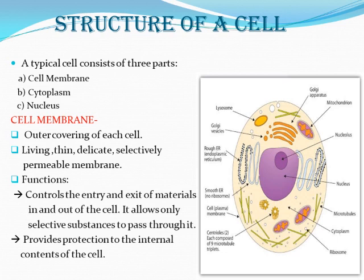Functions of the cell membrane: first, it controls the entry and exit of materials. Any material absorbed by the cell — its entry or exit is controlled by the cell membrane. That is the meaning of semi-permeable or selectively permeable. Second, it provides protection to the internal contents of the cell.